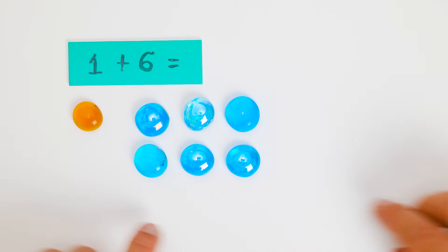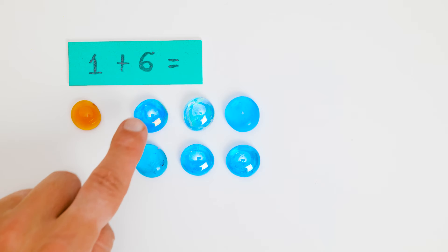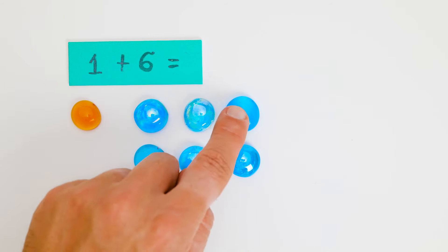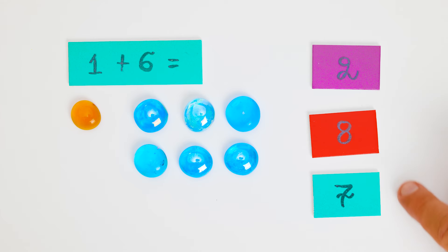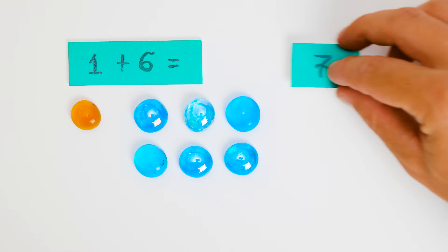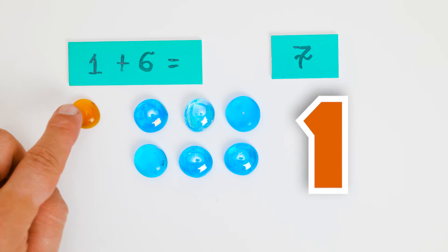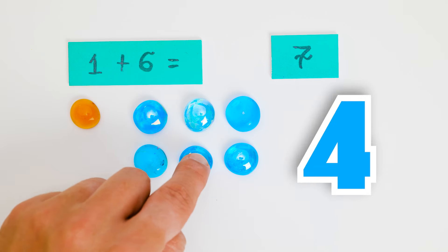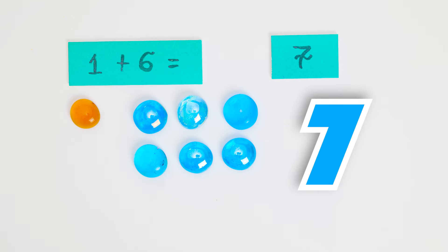Okay, it's time to count. One. One, two, three, four, five, six. Now, let's figure out what one plus six equals. It's seven. We can count the gems to make sure that's correct. One, two, three, four, five, six, seven. Awesome.